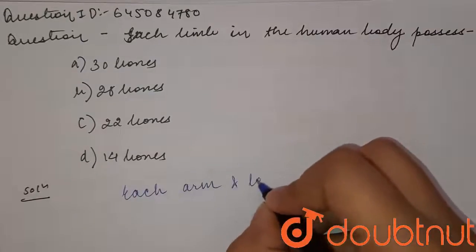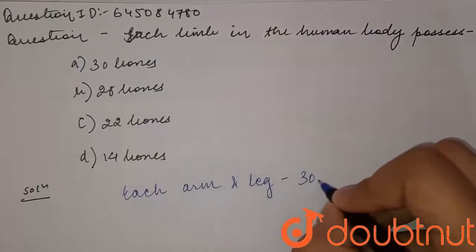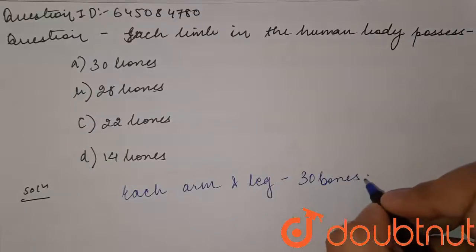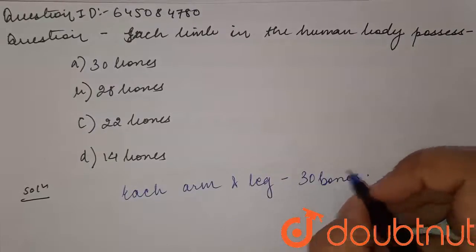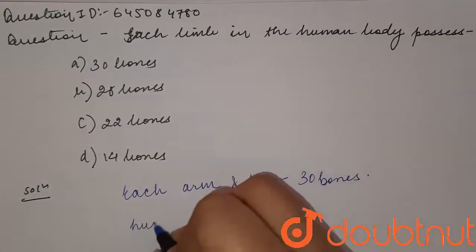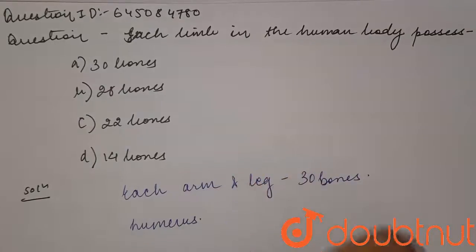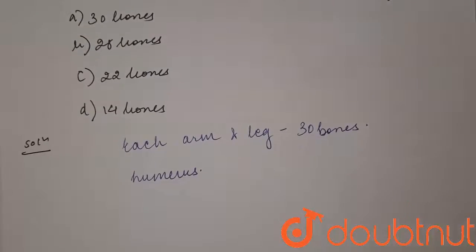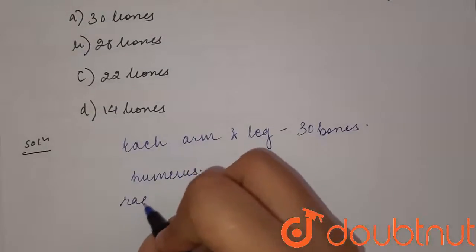Each arm and leg contains 30 bones. How is that? You know that each arm contains humerus, which is the upper arm, and the ulna, which is the forearm - radius and ulna, which is the forearm. I'm talking about the arm.